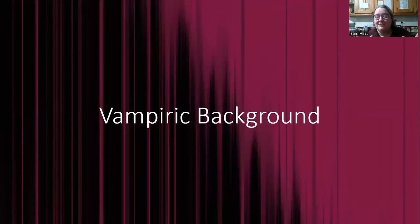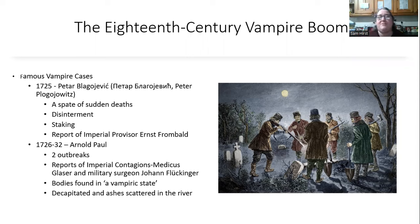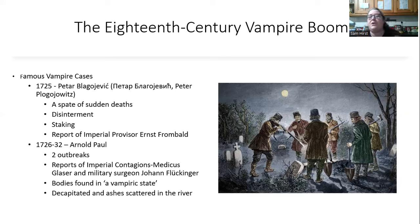Let's give you some vampiric background. In the 18th century, the vampire came to prominence in the vampire boom across Europe, related particularly to two famous vampire cases. The first was in 1725, involving the Serbian peasant Peter Bladjevic. This peasant died, and then there was a spate of sudden deaths. Each of the people who died reported that Peter had visited them and throttled them in the night.